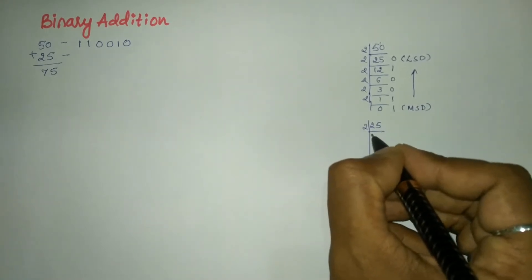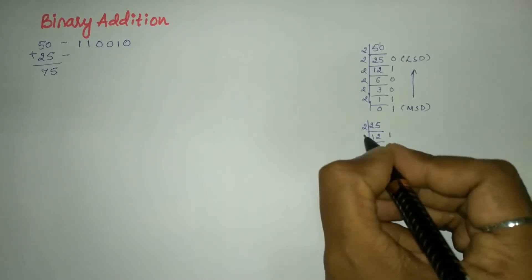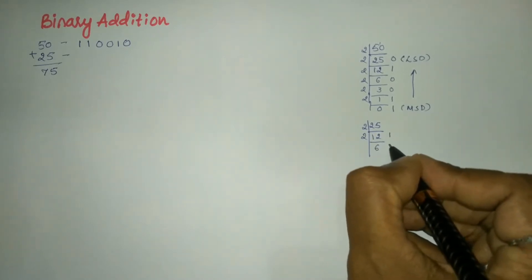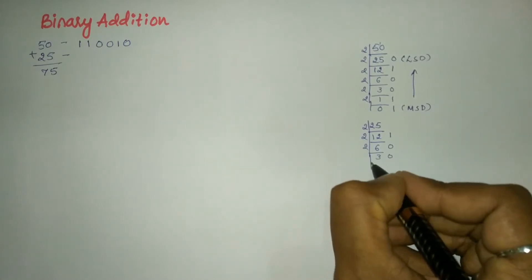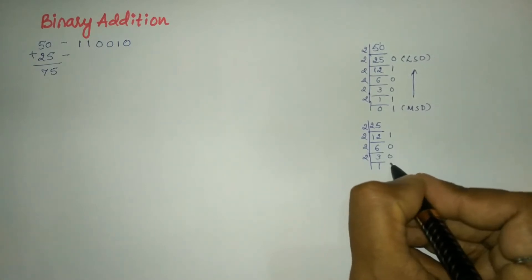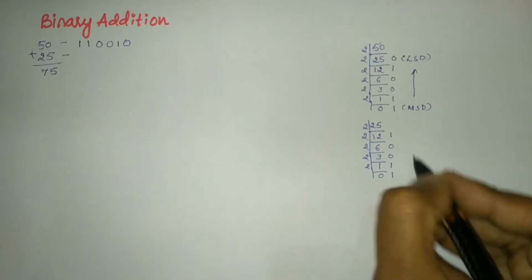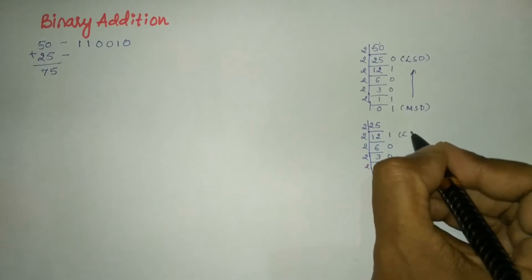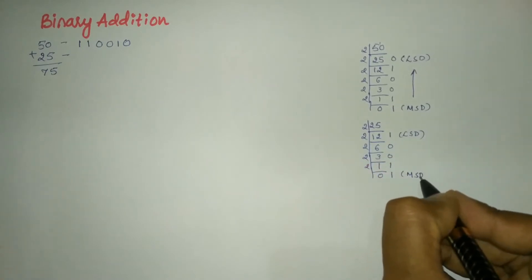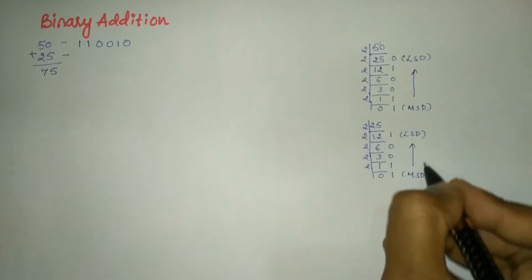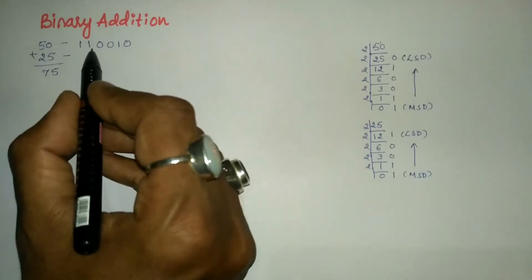Now let us convert 25 into binary notation. Divide 25 by 2: 2 into 12 is 24, remainder 1; 2 into 6 is 12, remainder 0; 2 into 3 is 6, remainder 0; 2 into 1 is 2, remainder 1. The quotient 1 becomes the remainder. The first remainder is the least significant digit and the last remainder is the most significant digit.